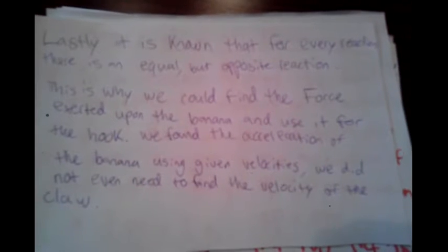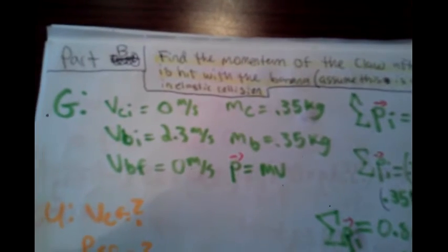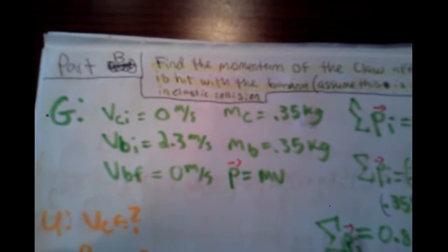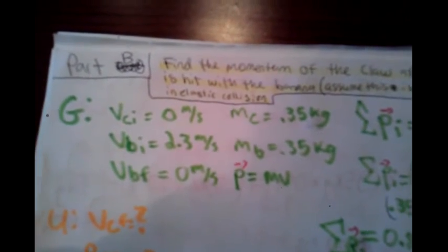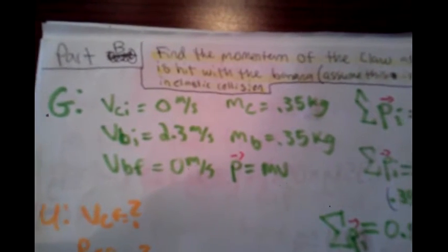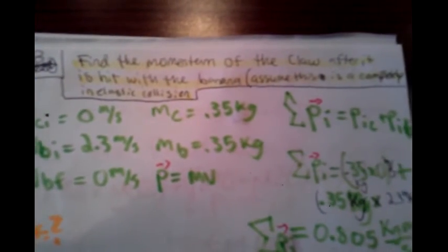Part B: Find the momentum of the claw after it is hit with the banana. Assume that this is a completely inelastic collision.